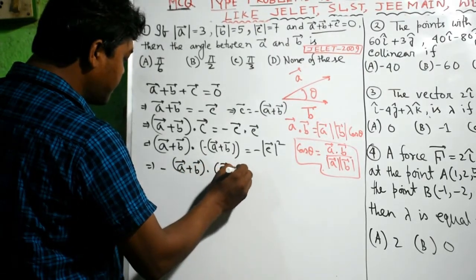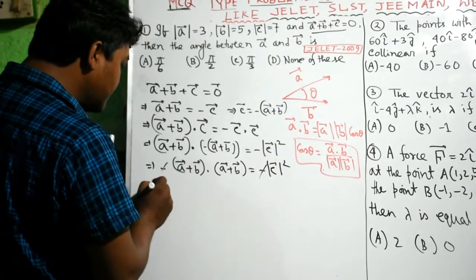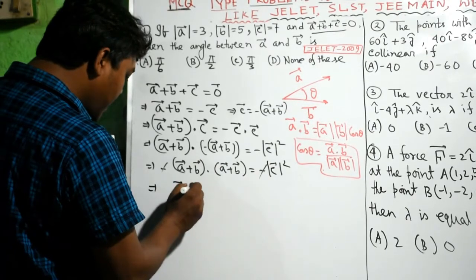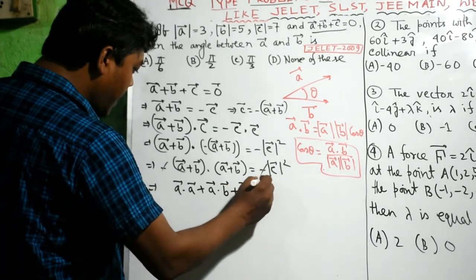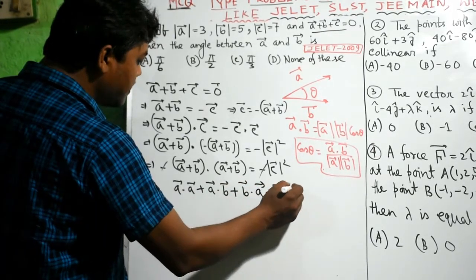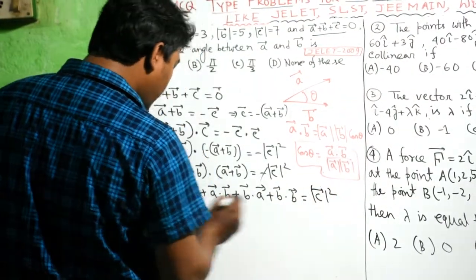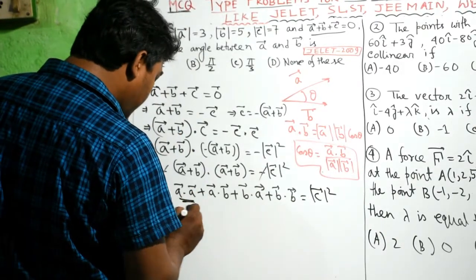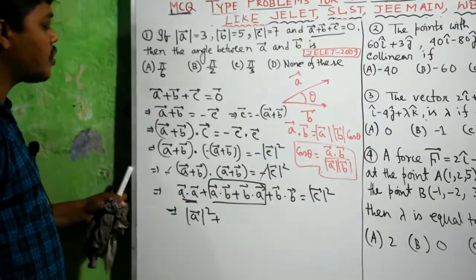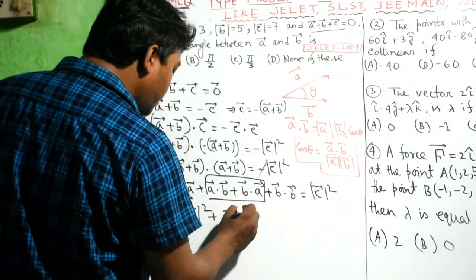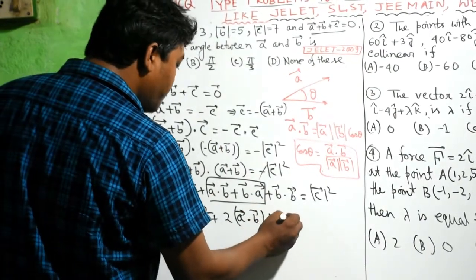Expanding (A plus B) dot (A plus B), you get A dot A, A dot B, B dot A, and B dot B — just simple multiplication using the dot product. This equals mod C squared. Since dot product is commutative, B dot A equals A dot B, so you can write 2 times A dot B. This gives mod A squared plus 2 A dot B plus mod B squared equals mod C squared.